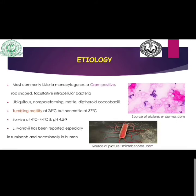Listeriosis is most commonly caused by Listeria monocytogenes, a gram-positive rod-shaped facultative intracellular bacteria. It is ubiquitous, non-spore-forming, motile diphtheroid coccobacilli. It has characteristic tumbling motility at 25°C but is non-motile at 37°C. It can survive at 4°C to 44°C and a pH range from 4.5 to 9. Listeria ivanovii has also been reported to cause listeriosis, especially in ruminants and occasionally in humans.